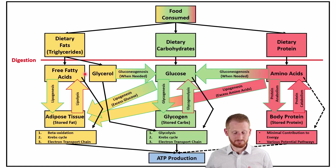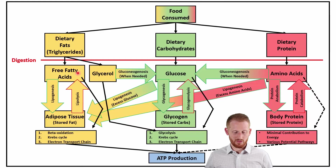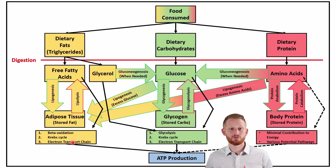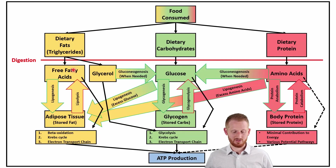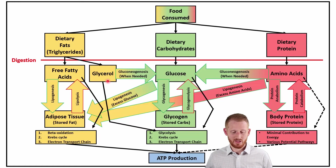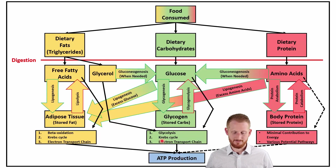When you consume these food stuffs, they go through digestion. Dietary fats — think triglycerides — get broken into free fatty acids and glycerol. The free fatty acids can either go through lipogenesis to be stored as adipose tissue back as triglycerides, or we can go the other way through lipolysis to become fatty acids again. When you have fatty acids, they go through beta oxidation, the Krebs cycle, and electron transport chain to produce ATP. The glycerol molecule can go through gluconeogenesis to produce glucose, or directly into glycolysis, then the Krebs cycle, then the electron transport chain to produce ATP.